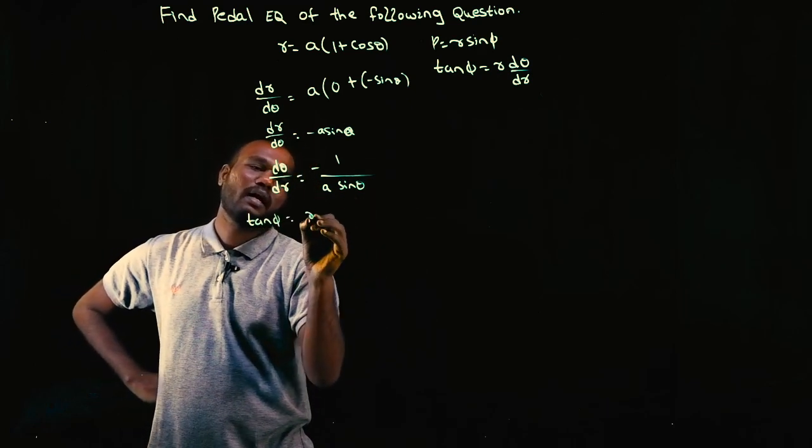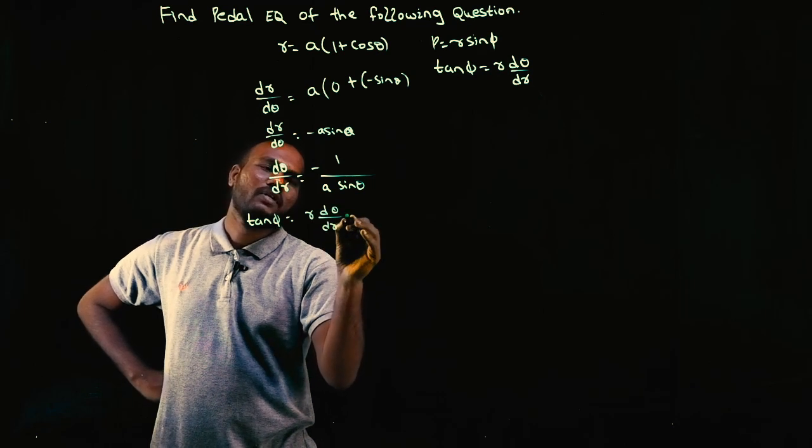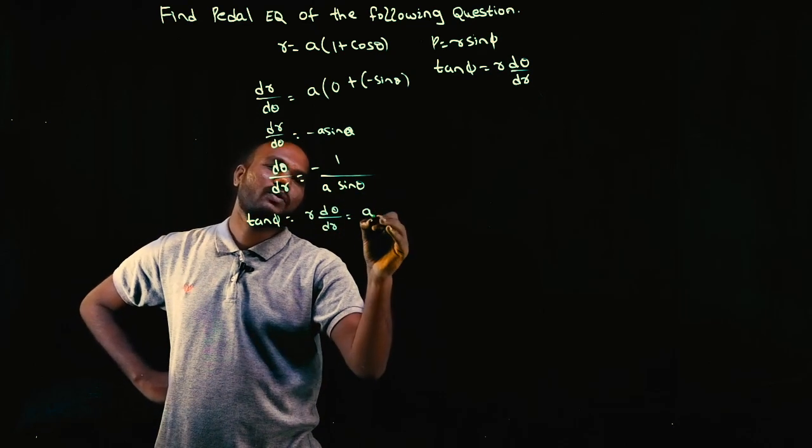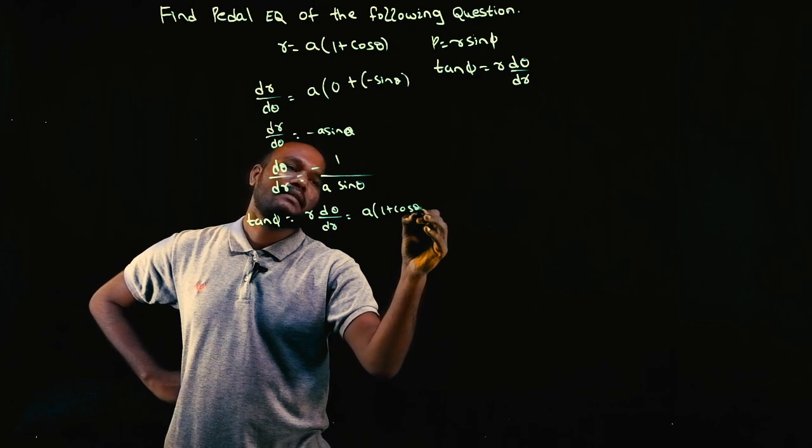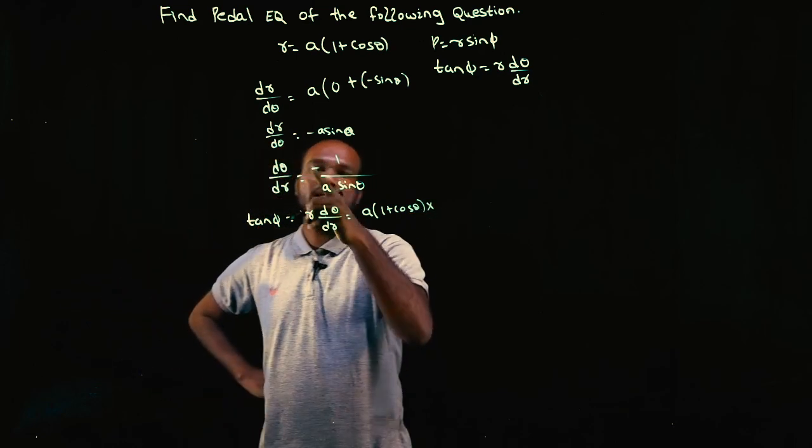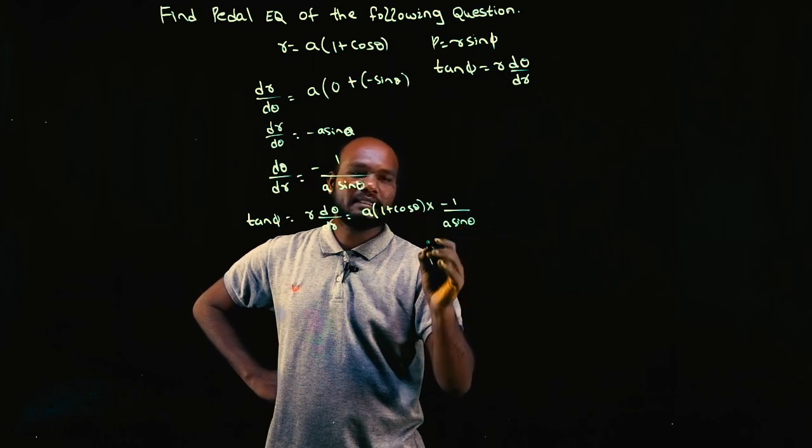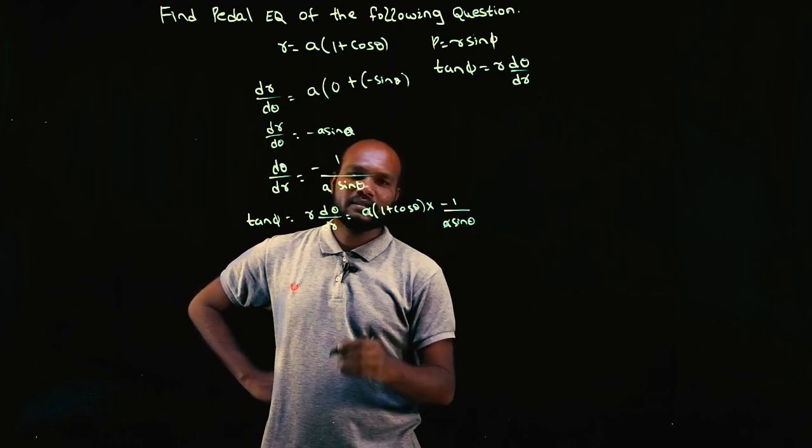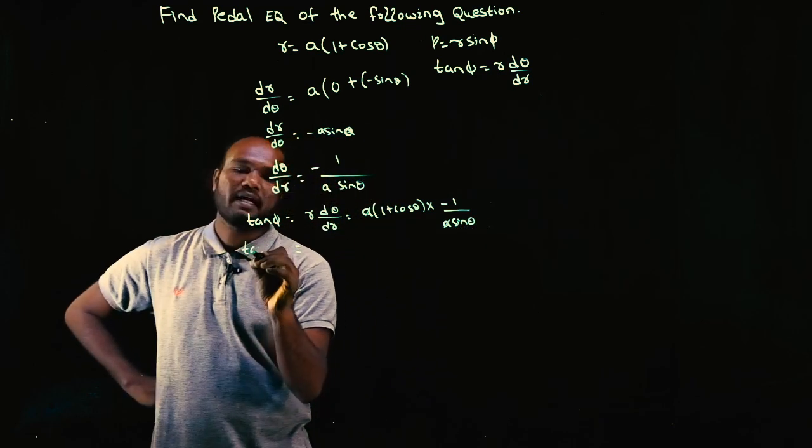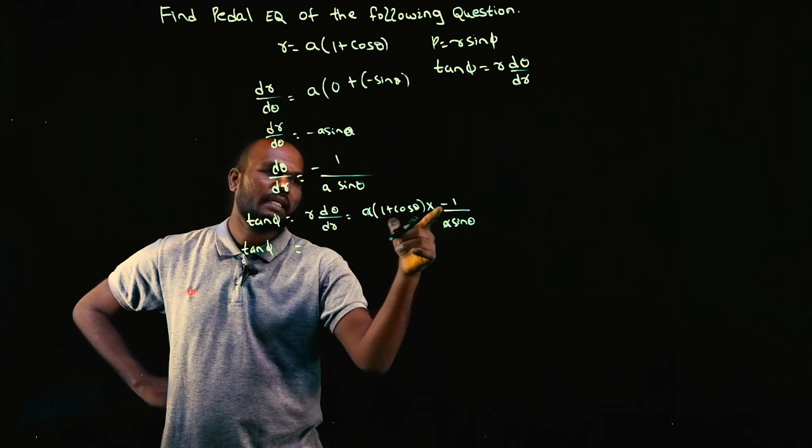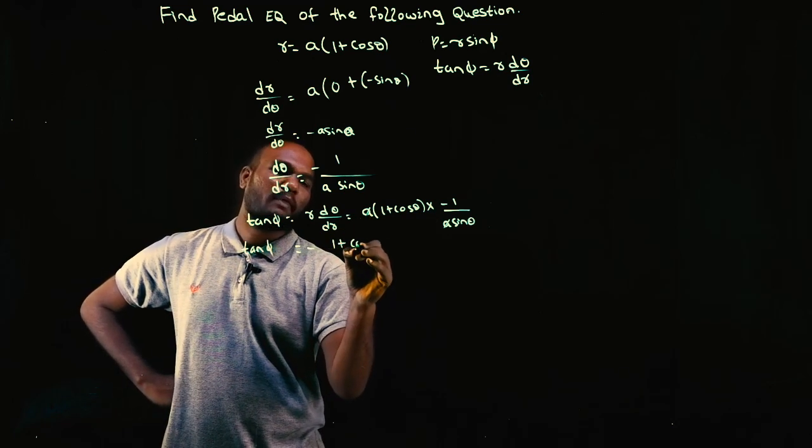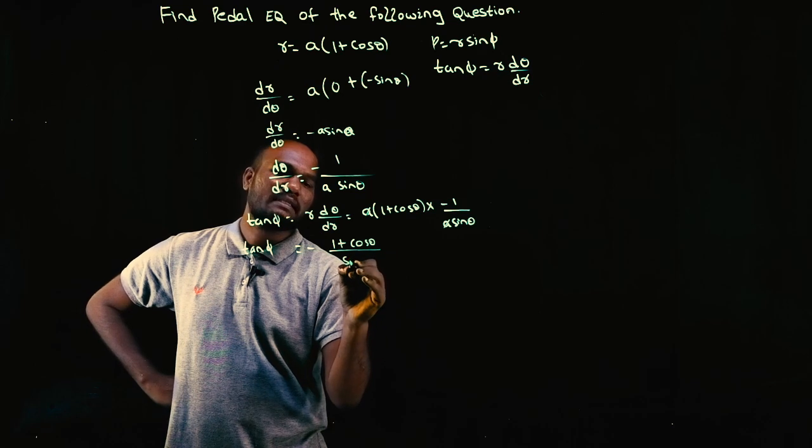So let's substitute the formula. Tan phi is equal to R into d theta by dr. So what is R? A into 1 plus cos theta times d theta by dr, which is minus 1 upon A into sine theta. A, A can be cancelled. So I'll be left with what?